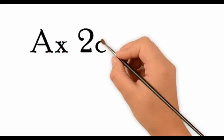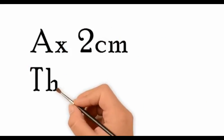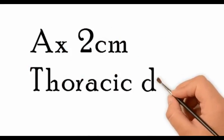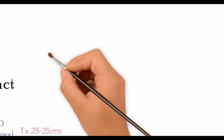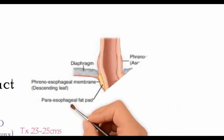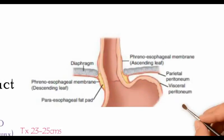The corkscrew pattern is seen during hypertrophy of the helical smooth muscle pattern. The thoracic esophagus passes through the hiatus in the diaphragm to become the abdominal esophagus, which is 2 cm in length. The thoracic duct lies just behind the esophagus as it crosses the hiatus.